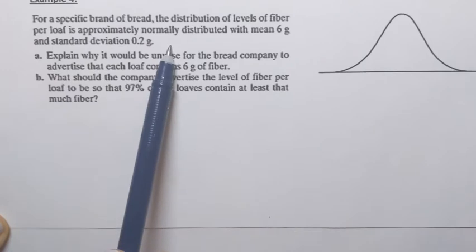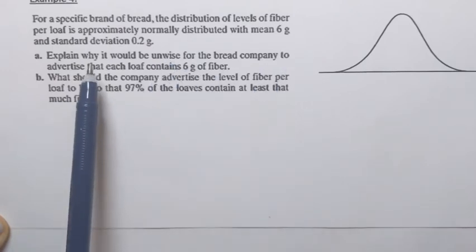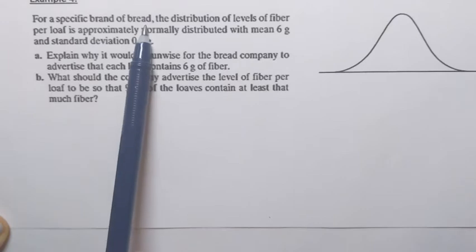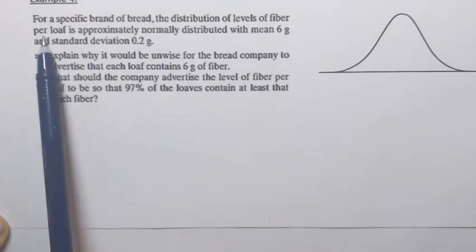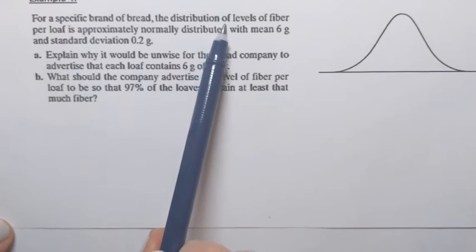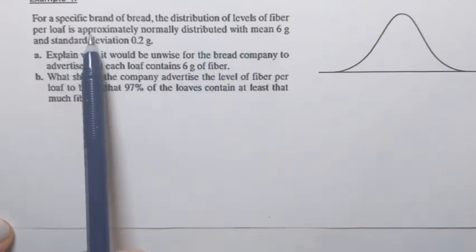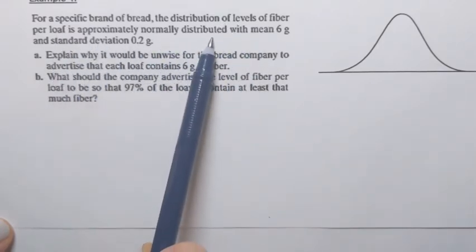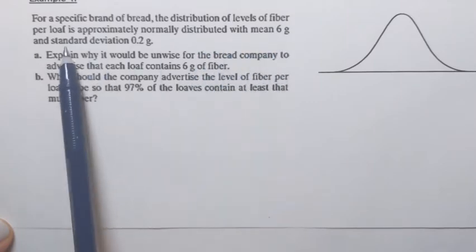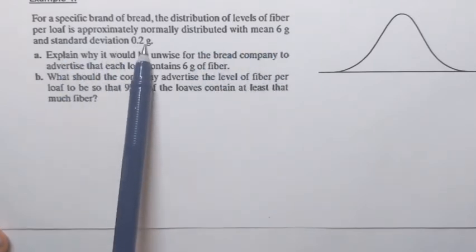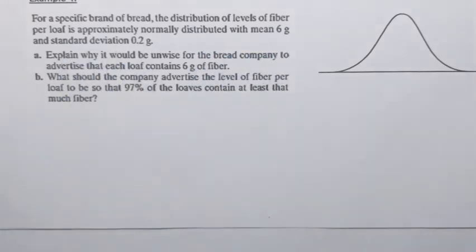Let's go back to the problem itself. What are we dealing with in this problem? We're dealing with bread and distribution of levels of fiber per loaf. But the fact that the levels of fiber per loaf are approximately normally distributed with mean 6 grams and standard deviation 0.2 grams means that not every loaf of bread has exactly the same amount of fiber.